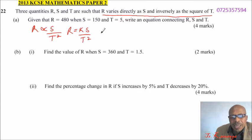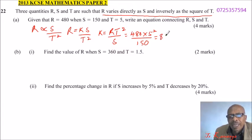We can substitute and make K the subject. K equals R times T squared divided by S. Since we have been given R is 480, multiply by T which is 5 squared, and divide by S which is 150. If you use your calculator, you will get 80.